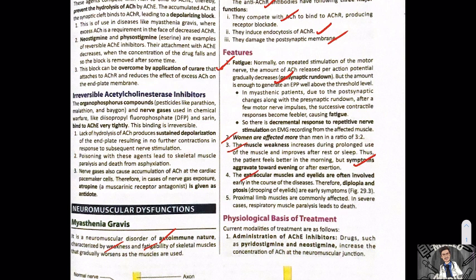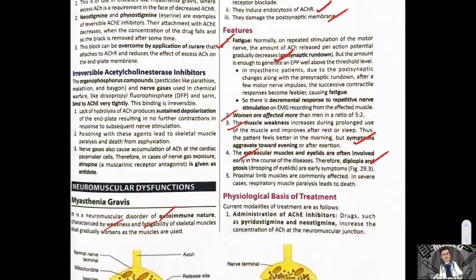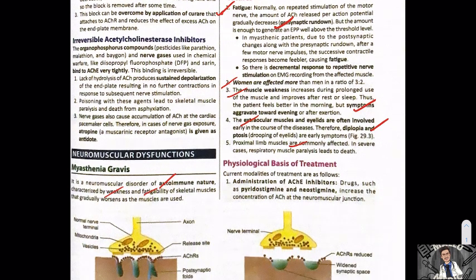Extraocular muscles and eyelids are often involved, leading to diplopia and ptosis. Proximal limb muscles are also commonly affected. Regarding the postsynaptic membrane: in a normal postsynaptic membrane there are grooves where the membrane is invaginated — infolded — to fit in a greater number of receptors. In myasthenia gravis, these infoldings are shallow because the receptors are affected.